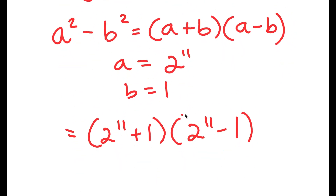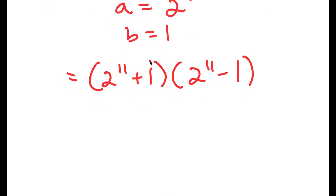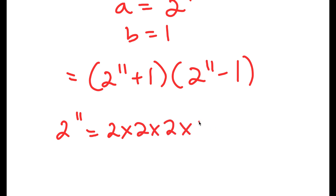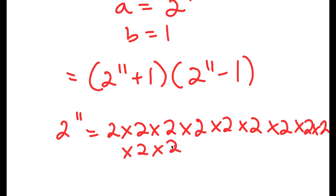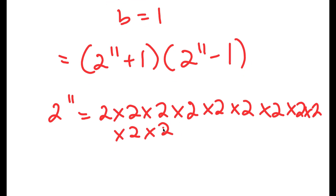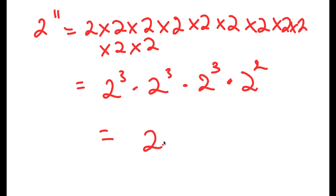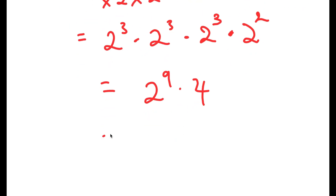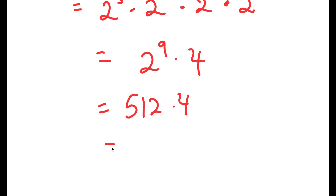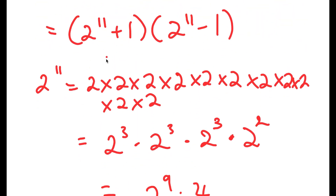Now, as you can see, this is much easier to solve than before, because 2 to the power of 11 — we know that 2 to the power of 11 is 2 multiplied by itself 11 times. This is the same thing as 2 to the power of 3, times 2 to the power of 3, times 2 squared, which equals 2 to the power of 9 times 4, which equals 512 times 4, which equals 2,048. So 2 to the power of 11 is 2,048.